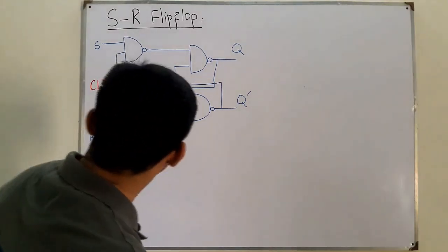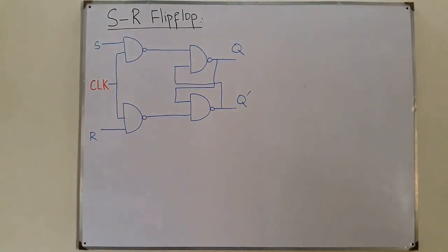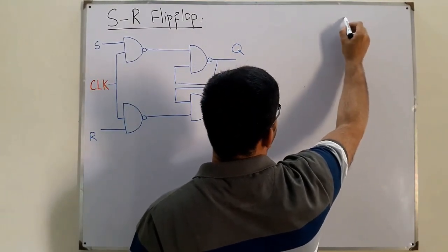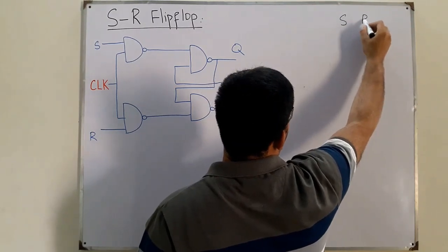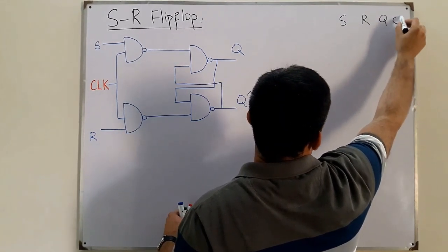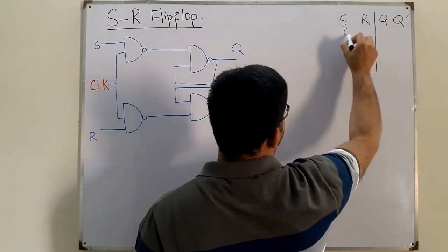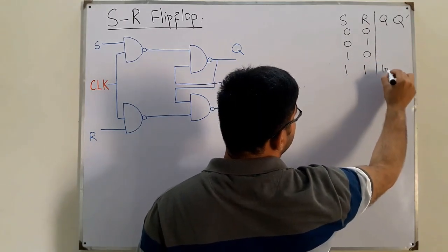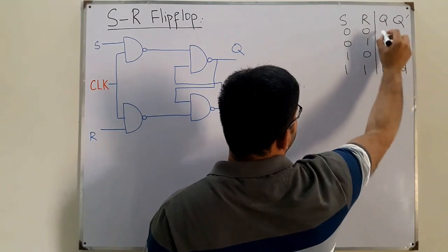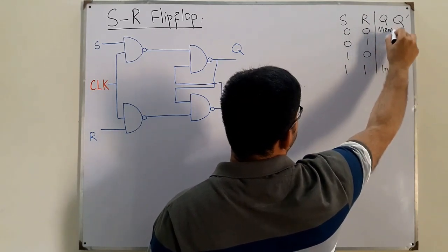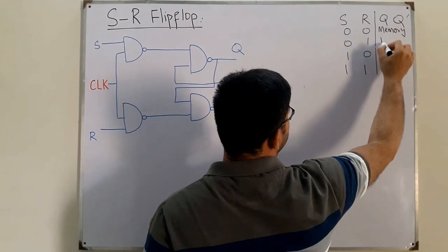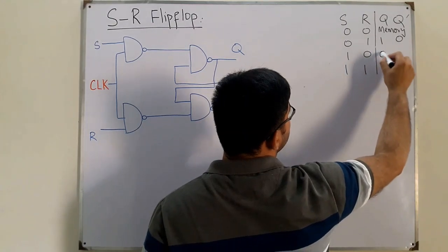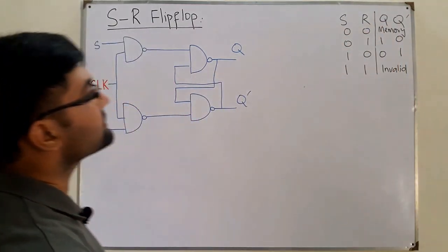Now we also know from our previous knowledge the truth table of the SR latch. If you have S and R inputs, the values of Q and Q complement are as follows: 0,0 is the memory state; 0,1 results in Q=1 and Q̄=0; 1,0 gives Q=0 and Q̄=1; and 1,1 is the invalid state. This is the truth table for the SR latch.